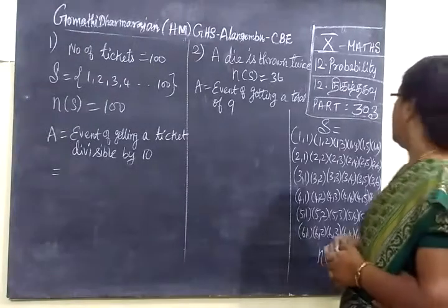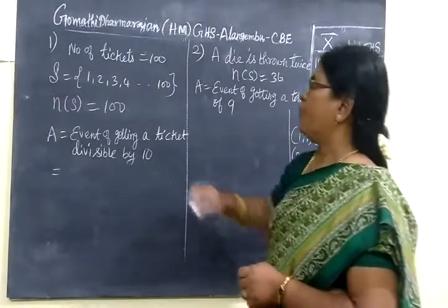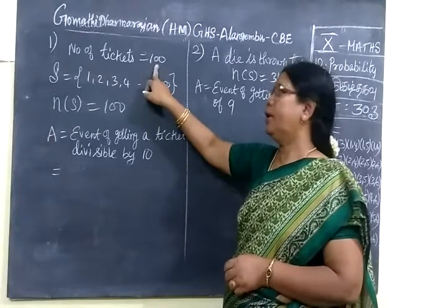So next we see problem 303. Here it is given number of tickets equal to 100. So in here there are 100 number of tickets.